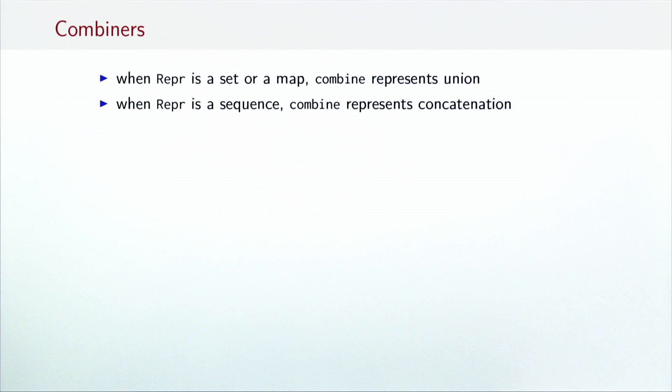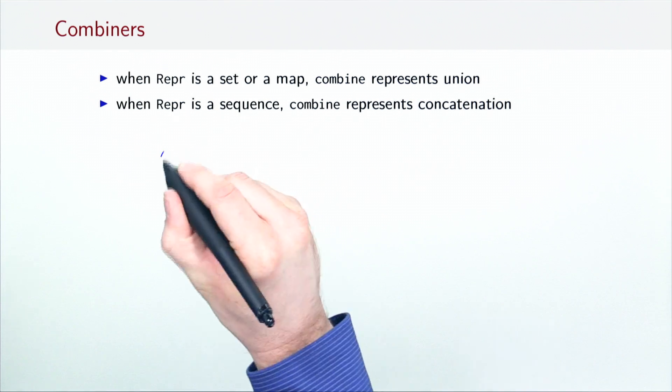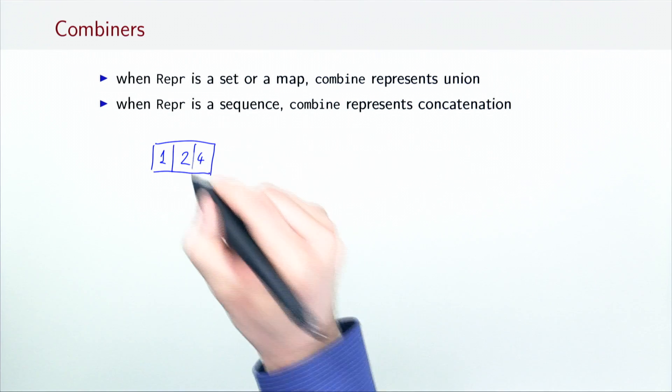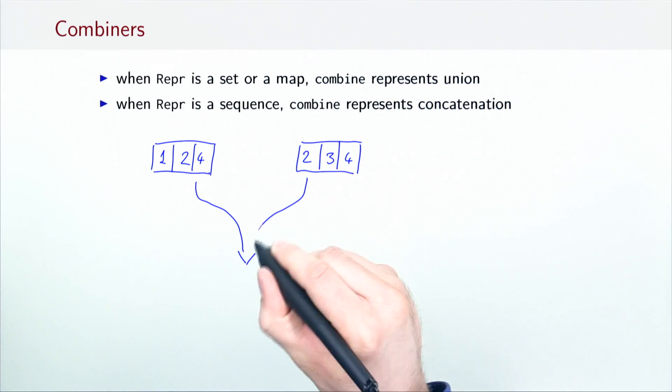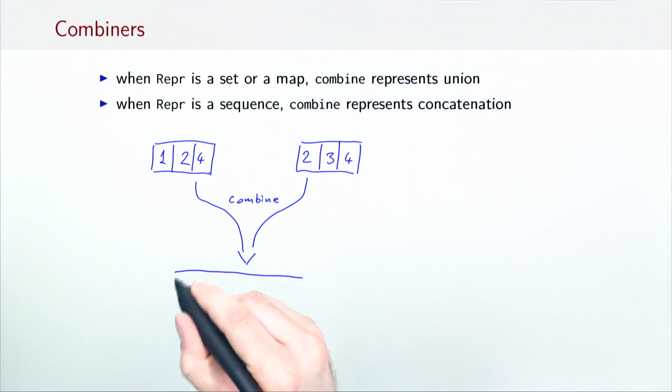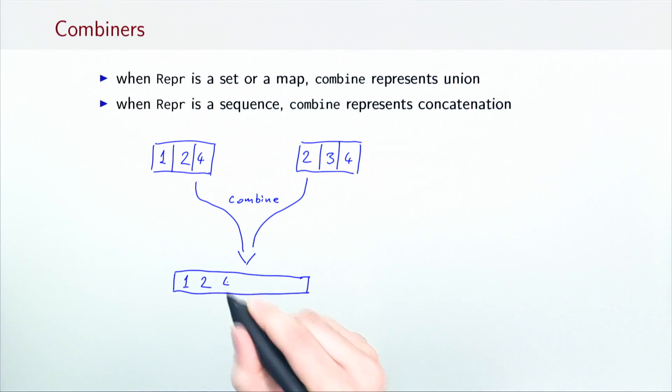When the collection wrapper is a Scala sequence, such as a vector or an array buffer, the combine operation represents concatenation. So, for example, given two sequences with the elements 1, 2 and 4, and 2, 3 and 4, the combine operation produces a new sequence with the elements 1, 2, 4, 2, 3 and 4.